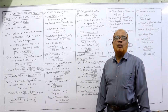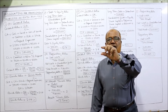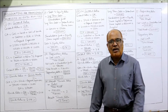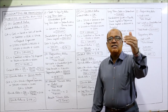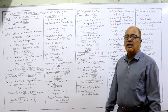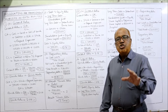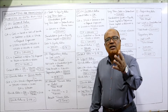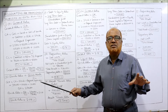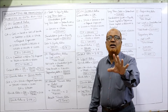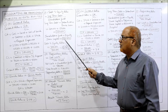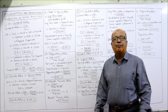Third ratio: debt equity ratio. Formula is long-term debt divided by shareholders fund. Long-term debt consists of two items: debentures 2 lakh and bank loan 1 lakh 50,000, total 3 lakh 50,000. Shareholders fund consists of only equity share capital — 5 lakh — since there is no preference share capital, reserves, or surplus here. Debt equity ratio: 3 lakh 50,000 divided by 5 lakh equals 0.7 is to 1.